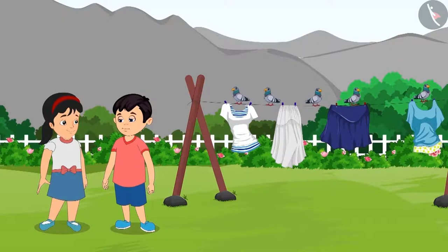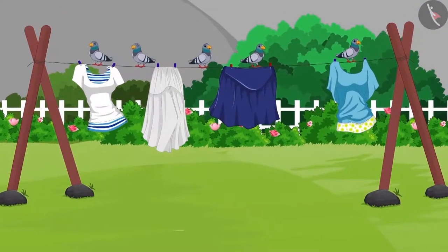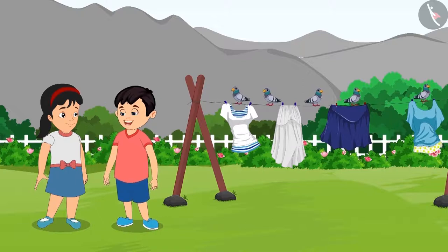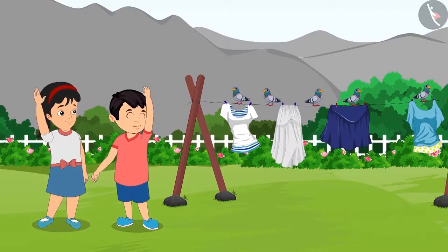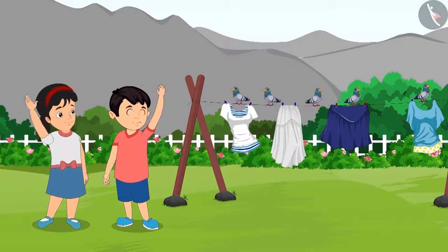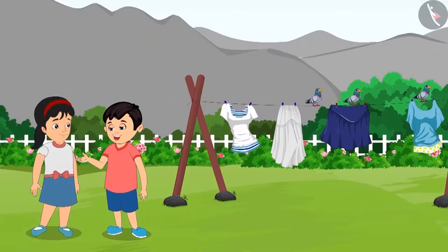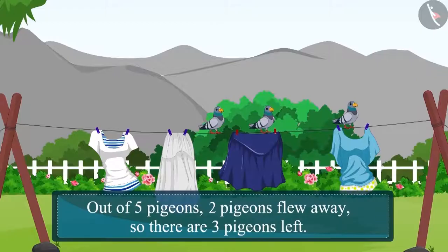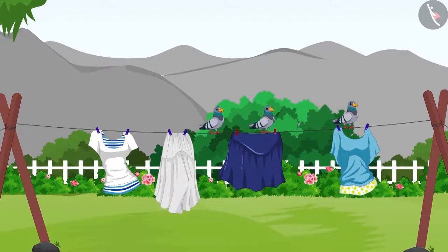On reaching home, Chotu goes to the garden to play with Pinky. He sees some pigeons over there. 'See, Pinky, those five pigeons are sitting on the clothes that have been put out for drying. They will spoil the clothes. Let's fly them away.' Chotu and Pinky then wave their hands towards the pigeons, and two pigeons flew away. 'Two pigeons flew away. How many pigeons are left now?' Out of five pigeons, two pigeons flew away, so there are three pigeons left.